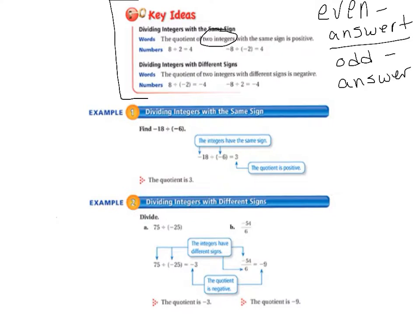And then the second part of your key ideas says, Dividing Integers with Different Signs, the quotient of two integers with different signs is negative. And it gives you some examples there. So, copy those exactly as they appear into your math notebook.